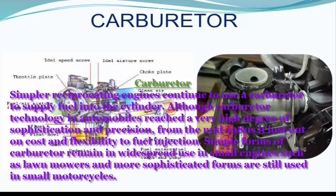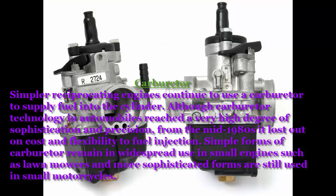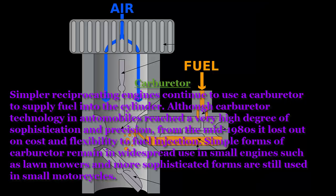Carburetor: Simpler reciprocating engines continue to use a carburetor to supply fuel into the cylinder. Although carburetor technology in automobiles reached a very high degree of sophistication and precision, from the mid-1980s it lost out on cost and flexibility to fuel injection. Simple forms of carburetor remain in widespread use in small engines such as lawn mowers, and more sophisticated forms are still used in small motorcycles.